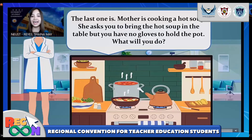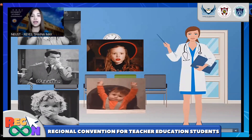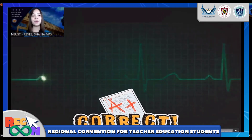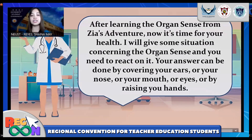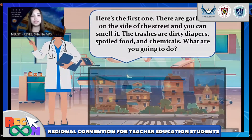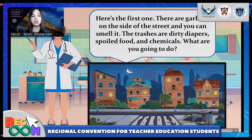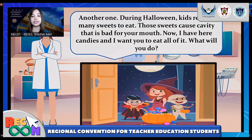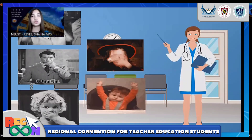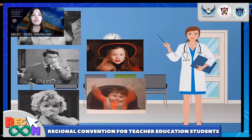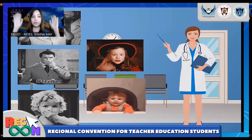After assisting SIA in returning to her friends and learning about organ sense from SIA's adventure, it is now time for students to help themselves. This part of our IM is called Healthy Sense, as it focuses on teaching students how to take care of their sense organs. The teacher will give situations concerning the sense organs and students need to react by covering their ears, nose, mouth, or by raising their hands.